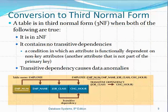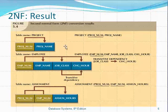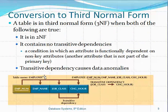To convert to the third normal form, we try to eliminate the remaining transitive dependencies. The project table and assignment table have no transitive dependencies, so the only issue for the third normal form is the employee table. A table is in the third normal form if it is in the second normal form and has no transitive dependencies — meaning the dependency must not exist between two non-primary-key attributes. Transitive dependencies cause data redundancy and may cause data anomalies.